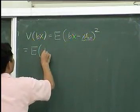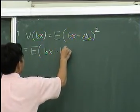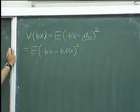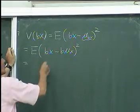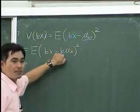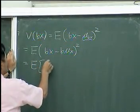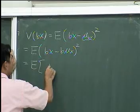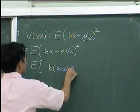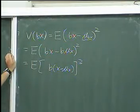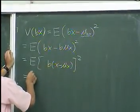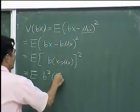So it should be expectation of (BX minus B·mu X) squared. We can factor B out because this term has B and this term also has B. So we put this out step by step — we have expectation of B times (X minus mu X), all squared. Then this becomes B squared times (X minus mu X) squared.